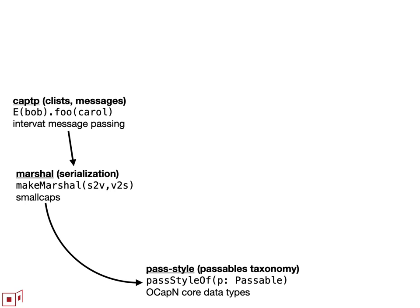The critical things we need interoperation on are the semantics of the passable taxonomy and the semantics of CAPTP. Disagreement on concrete representation could be handled by adapters if needed. But in order to have a shared notion of capability security, we do still need agreement on the abstract properties of these layers. I think nothing I'm saying so far should be controversial.